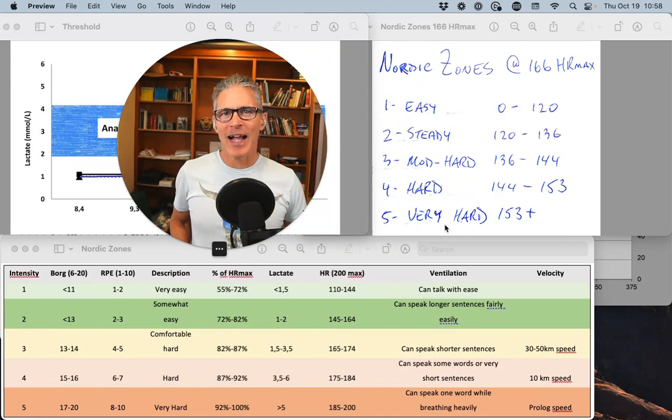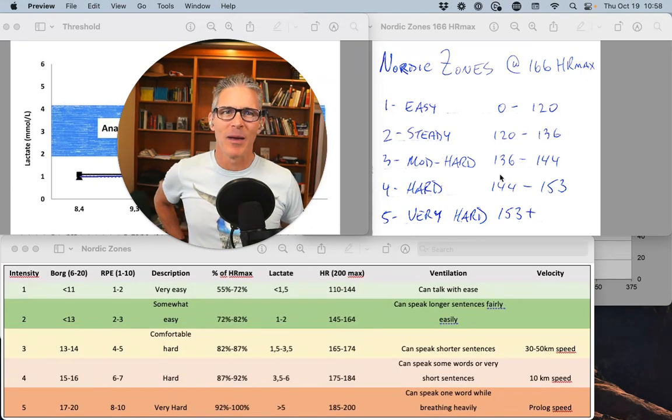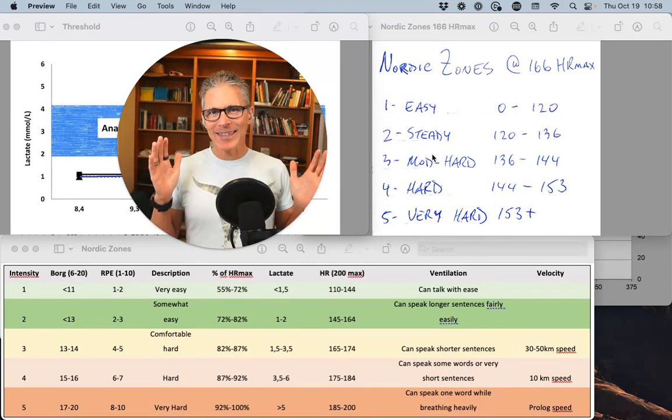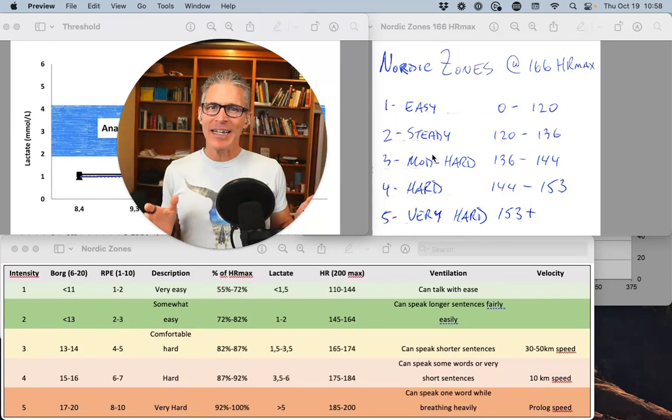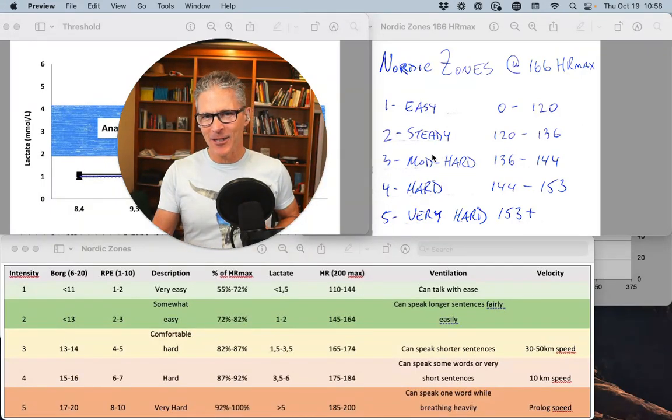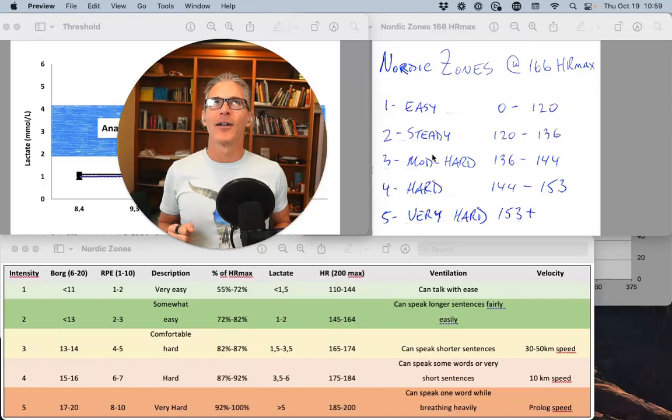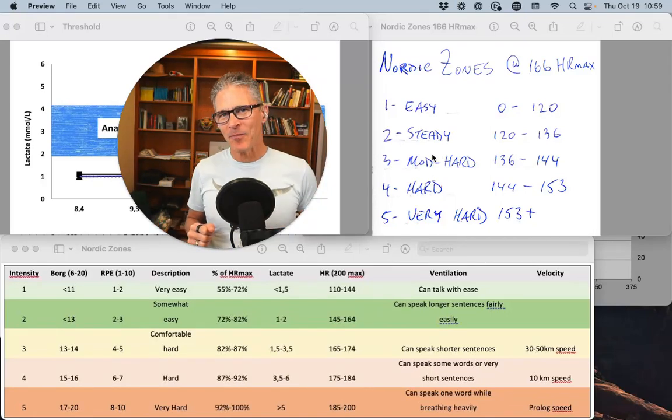Now, again from last time, there's the heart rate ranges. This one is using a 200 max. And this one's using a 166 max. And it'll give you these ranges for zone 3 and zone 4. And it's going to be a big range, even if you have a lower max than, say, a youngster. I mean, my kids' maxes are all well over 200 right now. And they are 11 to 15.